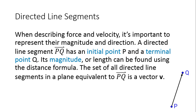Our book starts talking about directed line segments — line segments with a direction, meaning they have an arrow associated with them. When describing force and velocity, it's important to talk about the magnitude and direction. That directed line segment PQ has an initial point P and a terminal point Q. Notice the notation — it's a half arrow above it.